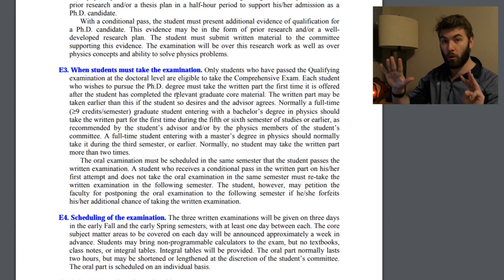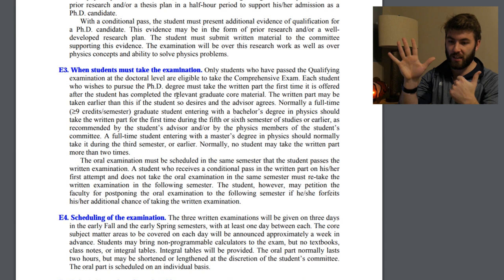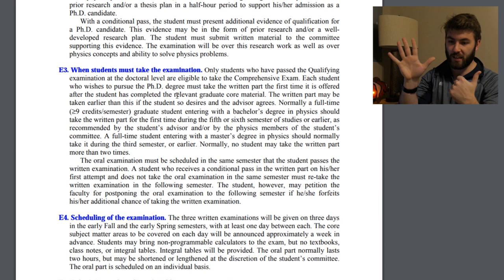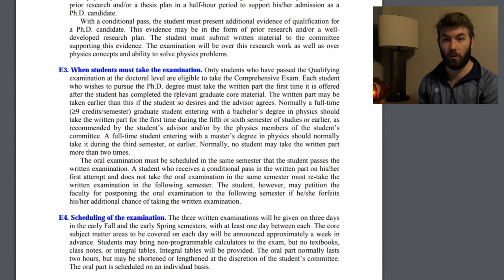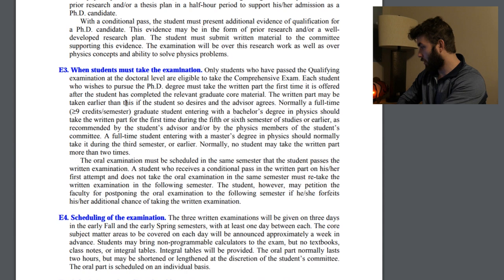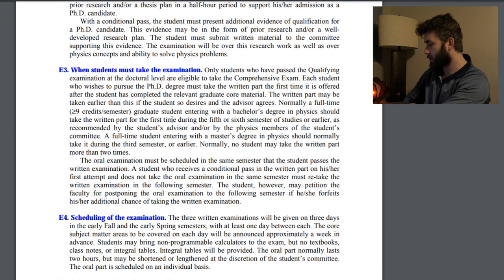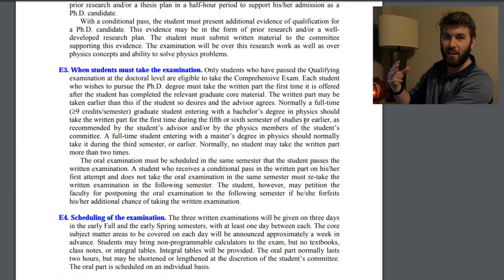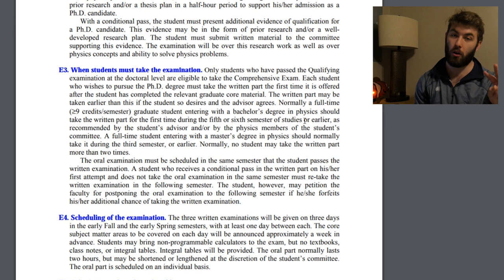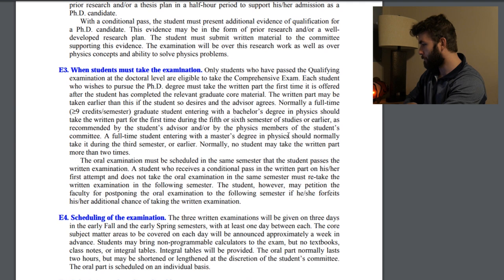There are eight core courses total: two in E&M, two in quantum mechanics, computational physics, classical mechanics, statistical mechanics, and math methods. After you've taken all of those courses — about four semesters' worth — you can finally take this comprehensive exam. The written part may be taken earlier if the student desires and the advisor agrees. Normally, a full-time nine-credit-semester grad student entering with a bachelor's in physics should take the written part for the first time during the fifth or sixth semester. That makes perfect sense for me — I've already taken three of those eight courses, I'll take another three next semester, plus two semesters of E&M, which puts me on track for the fifth semester.